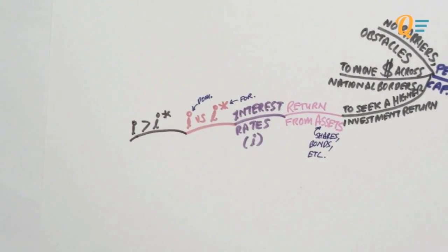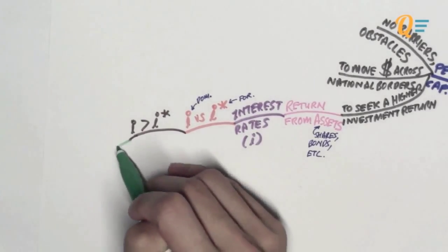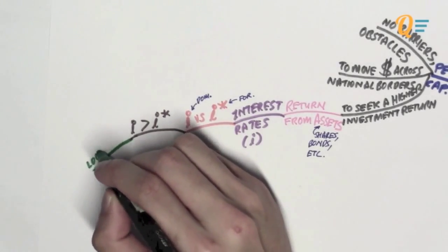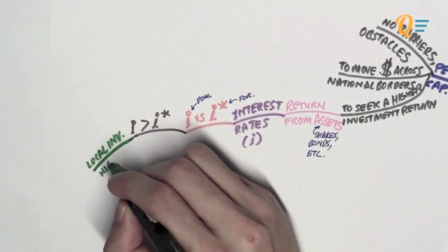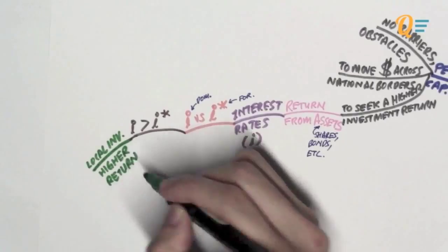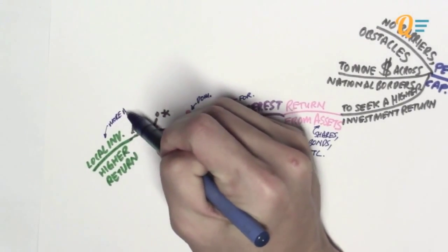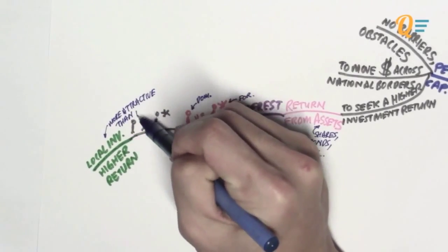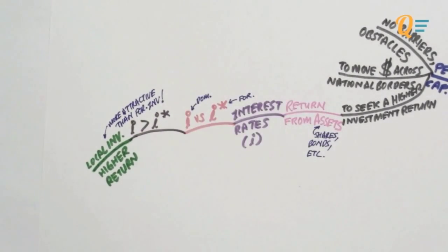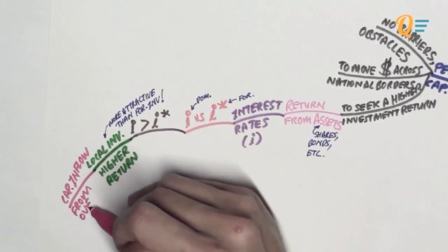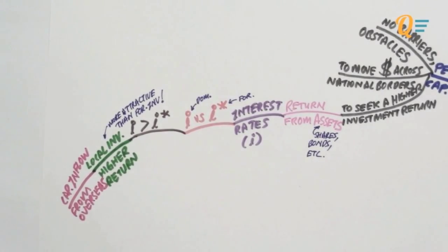So let's say domestic interest rates are higher than foreign interest rates. What does this mean to me as an investor? Well, what it means is very simple. It means that local investment is giving me a high return as compared to the foreign investments. In other words, local investments are going to be more attractive than foreign investment because it gives me a higher investment return. So if I'm a rational investor, what I'm going to do is I'm going to pump all my money into the domestic asset.